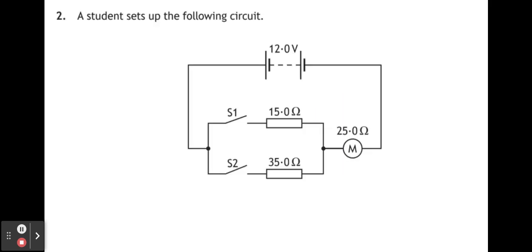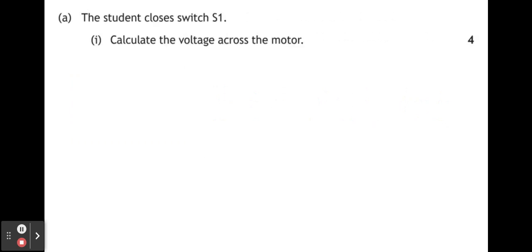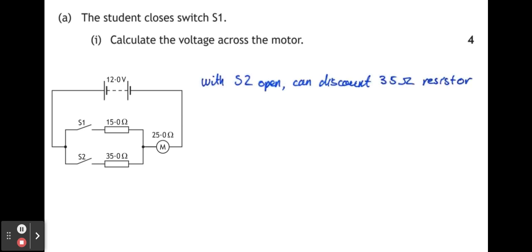Question 2. A student sets up the following circuit. The student closes switch 1. Calculate the voltage across the motor. Here's the circuit. When switch 1 is closed but switch 2 is open, that's almost as if the 35 ohm resistor doesn't exist. No current will be passing through that part of the circuit, so we can ignore that little section there.